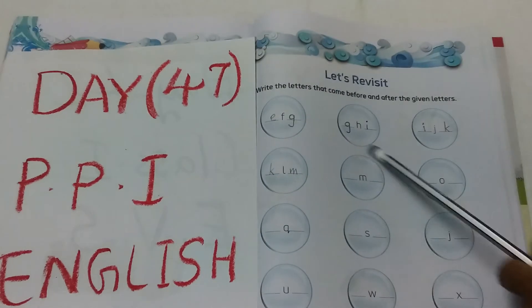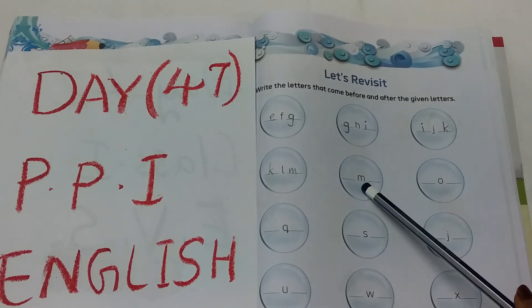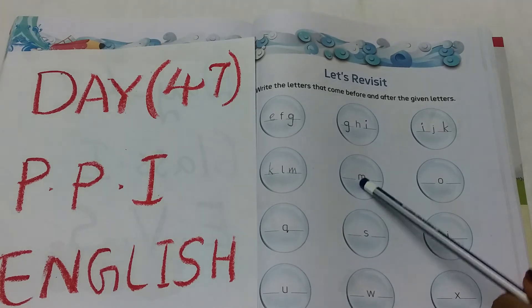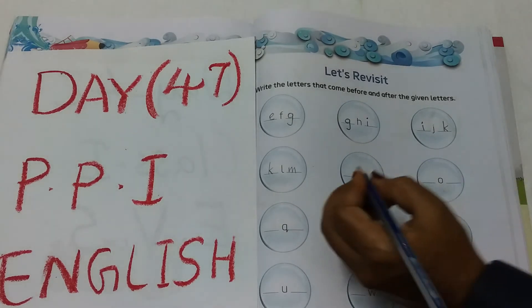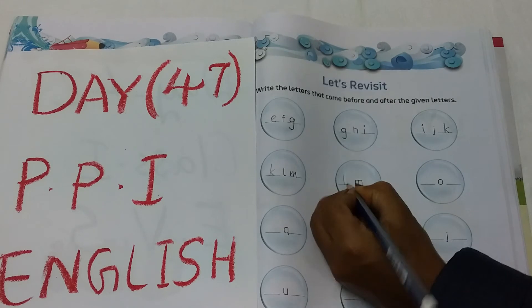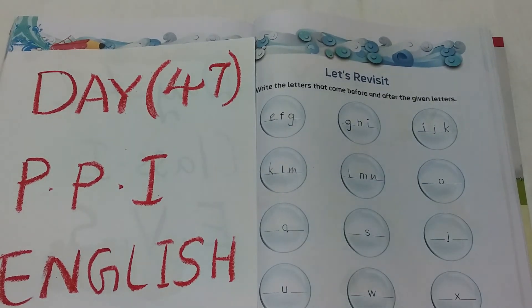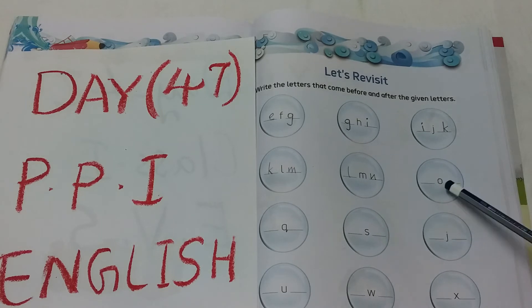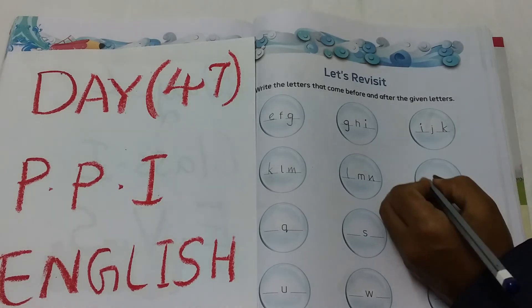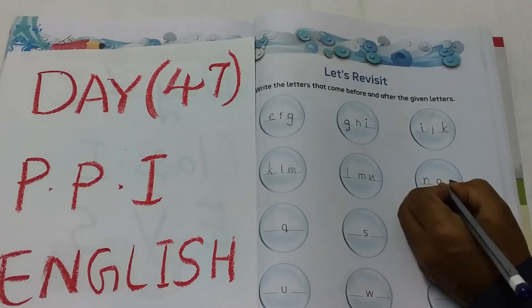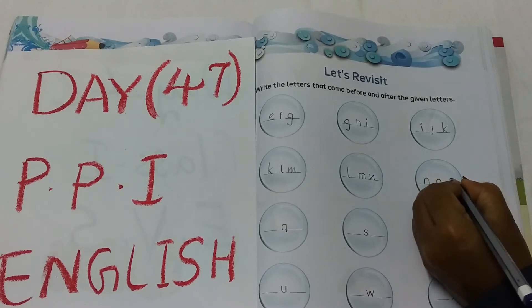Now see the next circle. It's a letter M. Before M, L. L, M, N. Now see the next circle. It's a letter O. Before O, N. N, O, P.